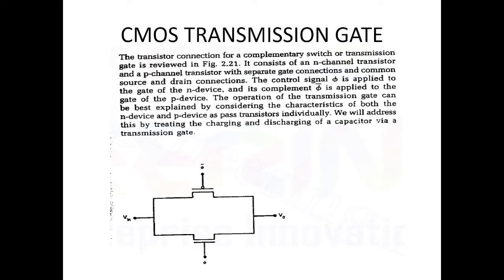In particular, we are considering the CMOS transmission gate under static and dynamic conditions. It is actually a capacitor — there is a capacitor that exists at the gate terminal, where we have a metal oxide. Static and dynamic means we are changing the properties, looking at how the CMOS transmission gate behaves under static and dynamic conditions.